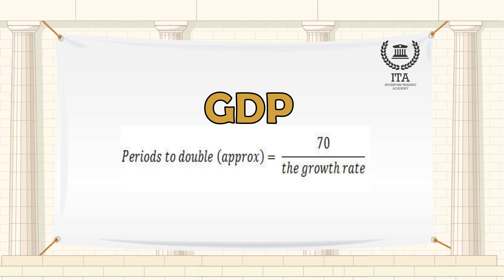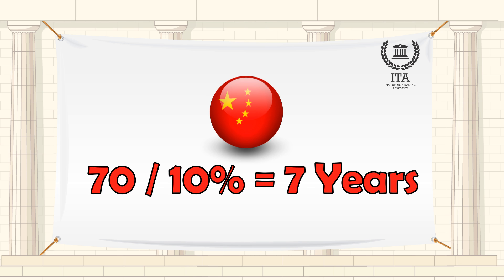Another useful application of the Rule of 70 is in the area of estimating how long it would take a country's real GDP to double. Similar to compound interest rates, one can use the GDP growth rate in the divisor of the rule. For example, if the growth rate of China is 10%, the Rule of 70 predicts it would take 7 years for China's real GDP to double.